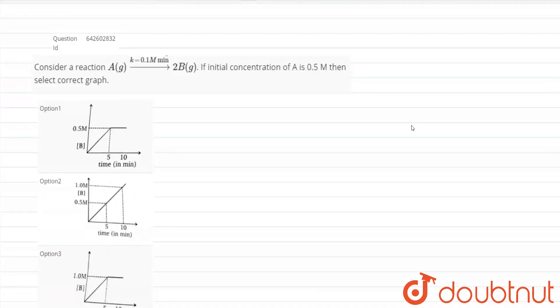The question is: consider the reaction A gas goes to 2B gas and the rate constant is given as 0.1 molar per minute. If the initial concentration of A is half molar then select the correct graph.